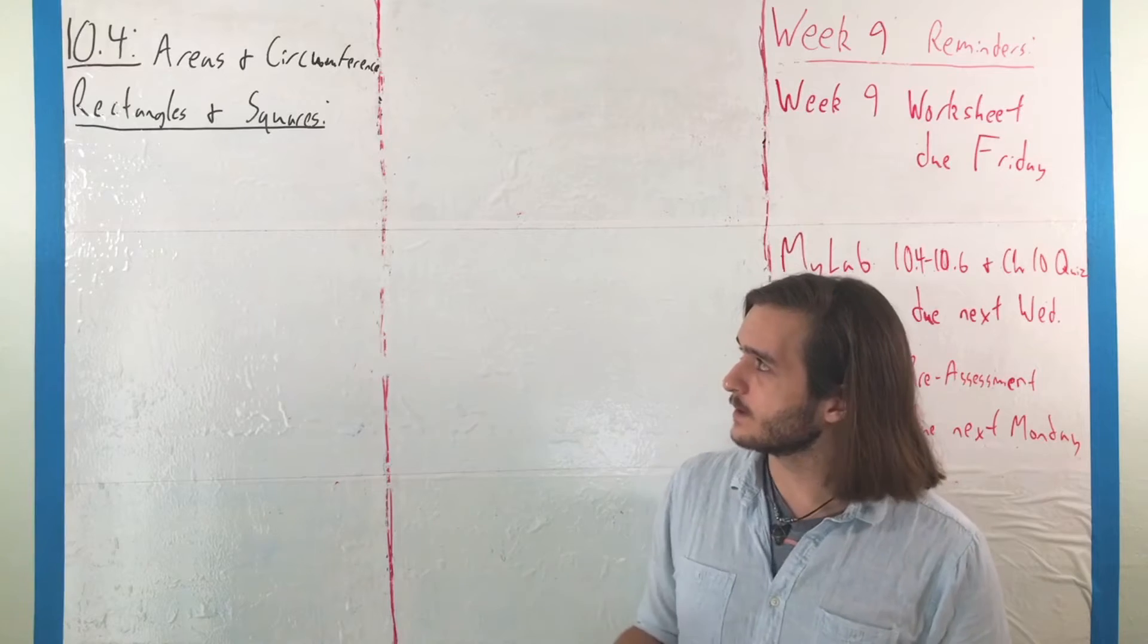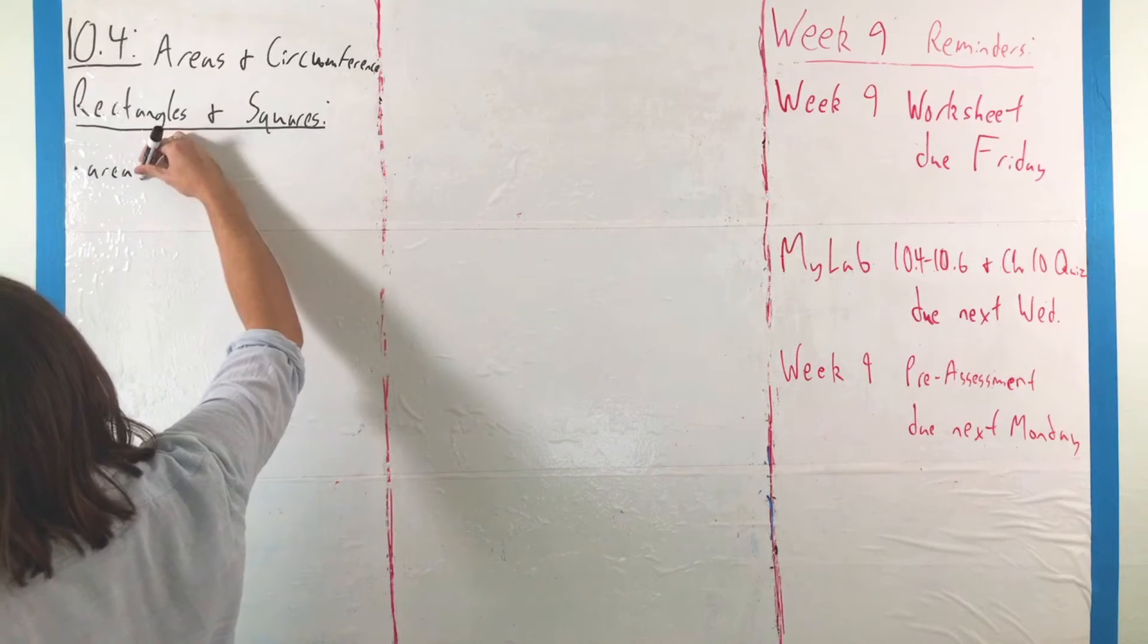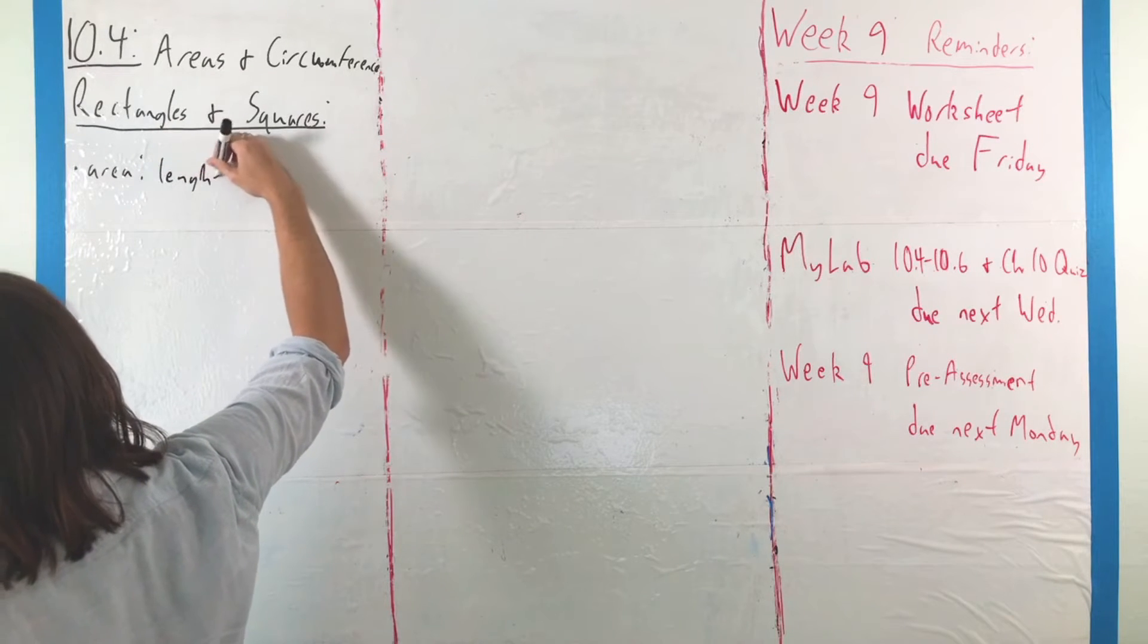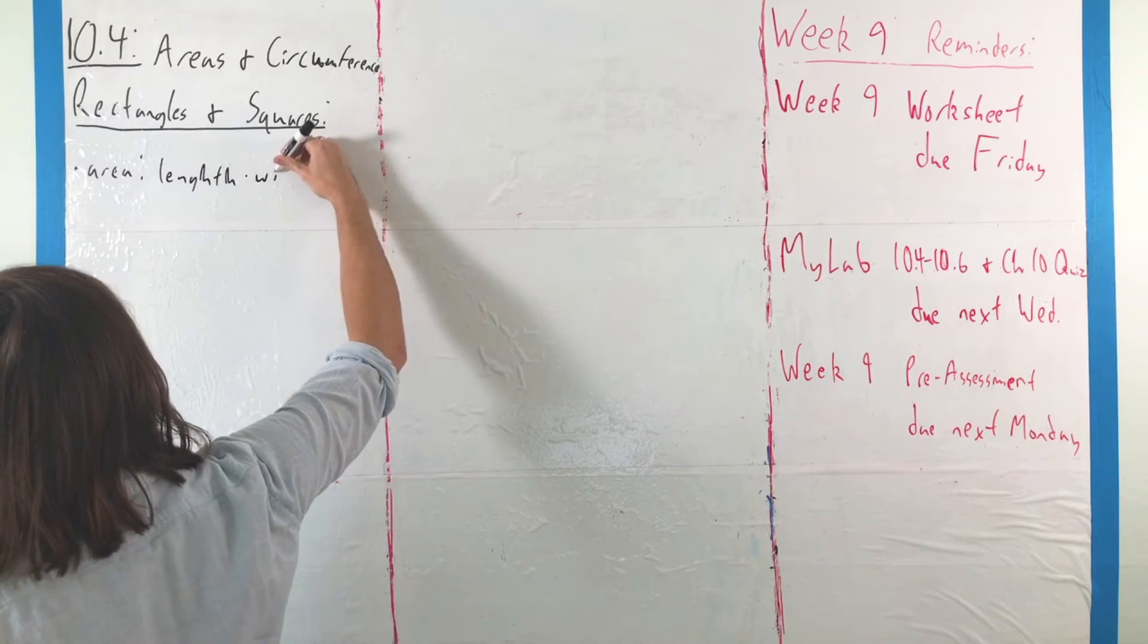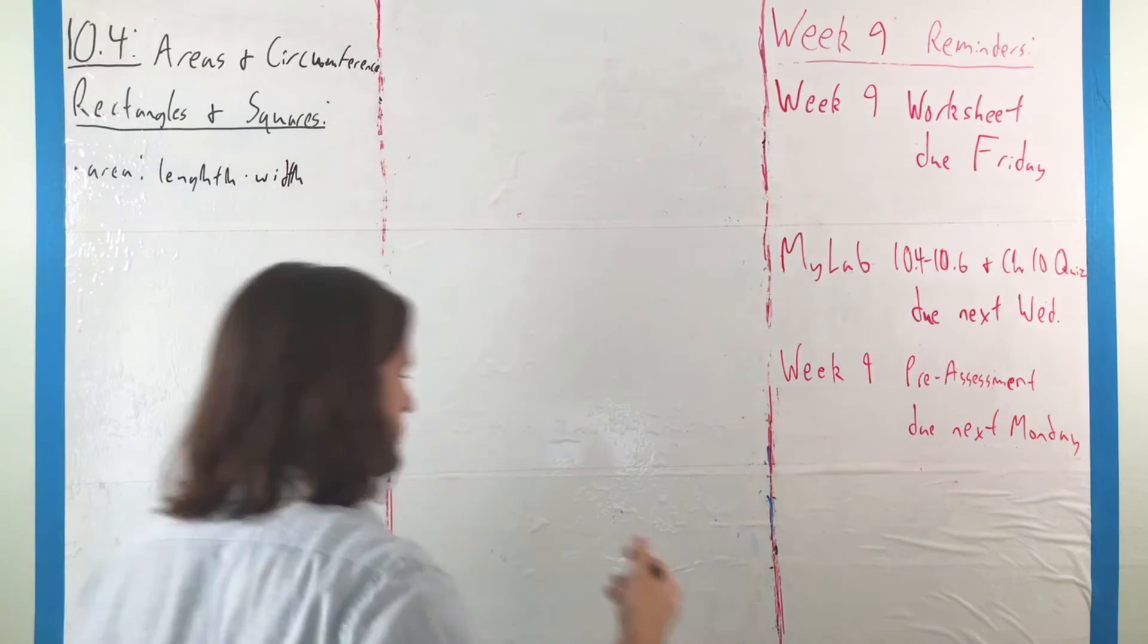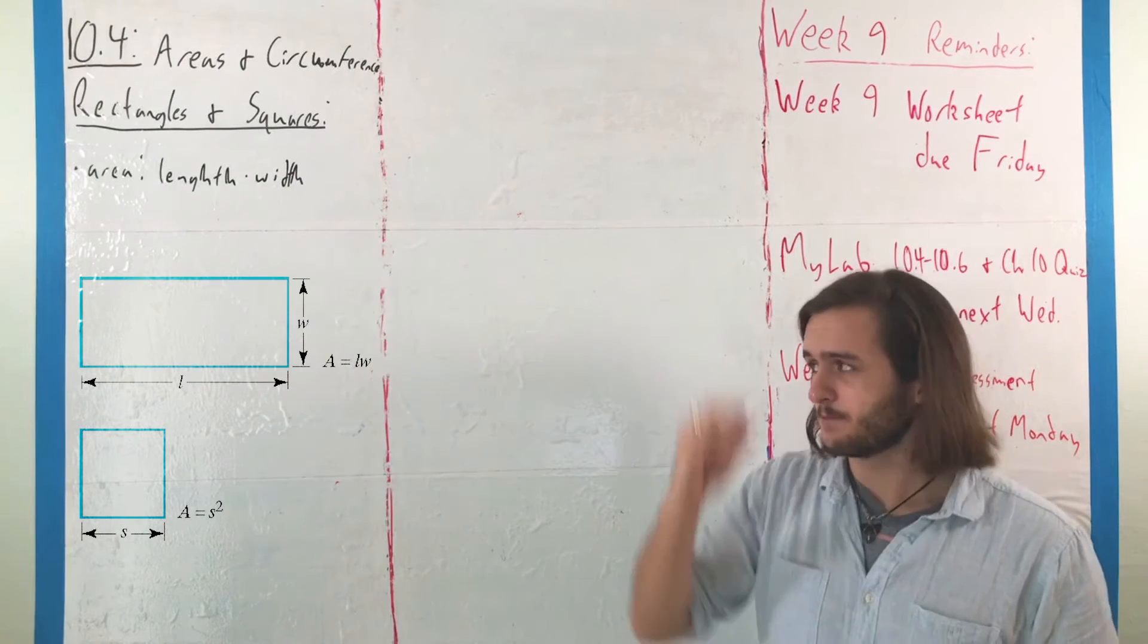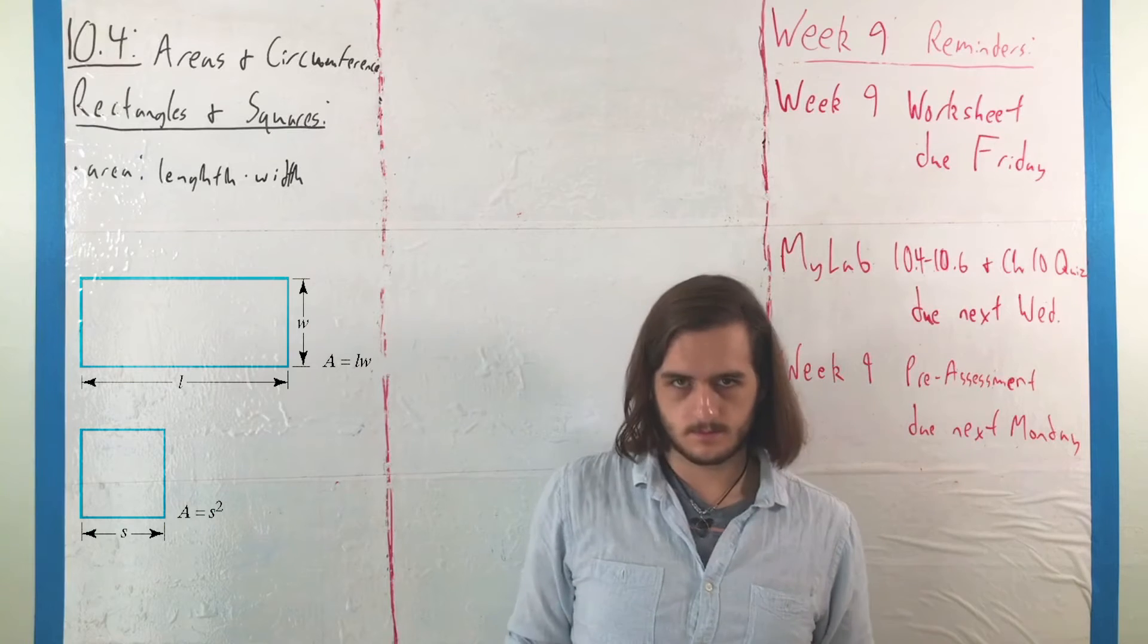For rectangles and squares, if you want to find area, all you do is look at length times width, or width times height, or height times width, however you want to talk about it—the dimension in one direction multiplied by the dimension in another direction.